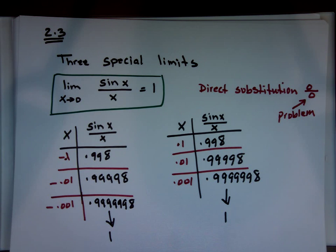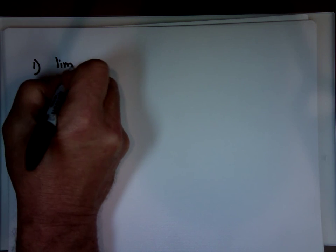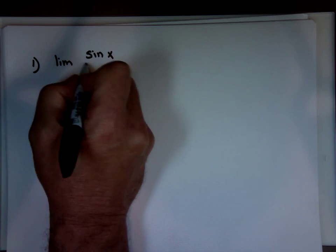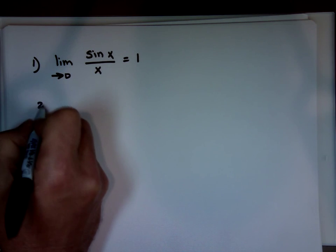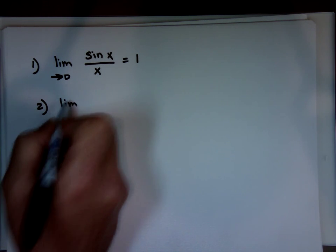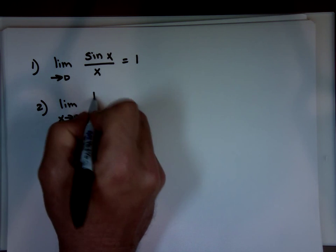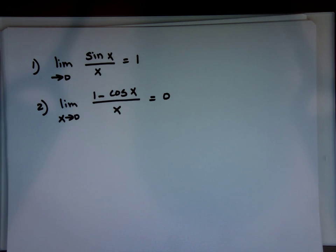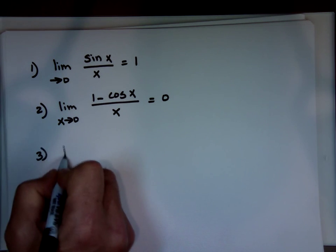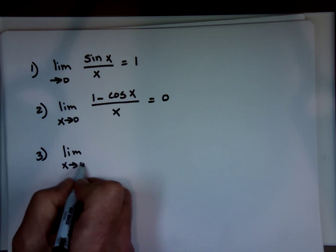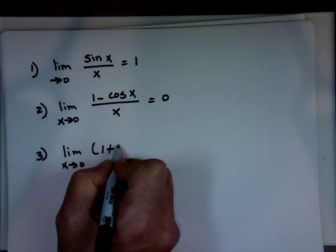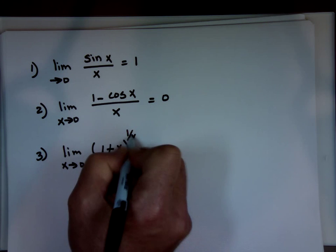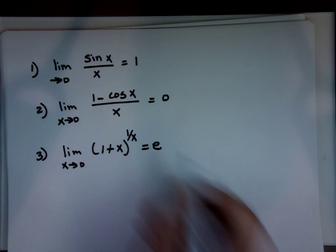Now let me write all three special limits together. Number one: the limit as x approaches zero of sine x over x equals one. Number two: the limit as x approaches zero of one minus cosine x over x equals zero. And number three: the limit as x approaches zero of one plus x to the power of one over x equals e. These are the three special cases.